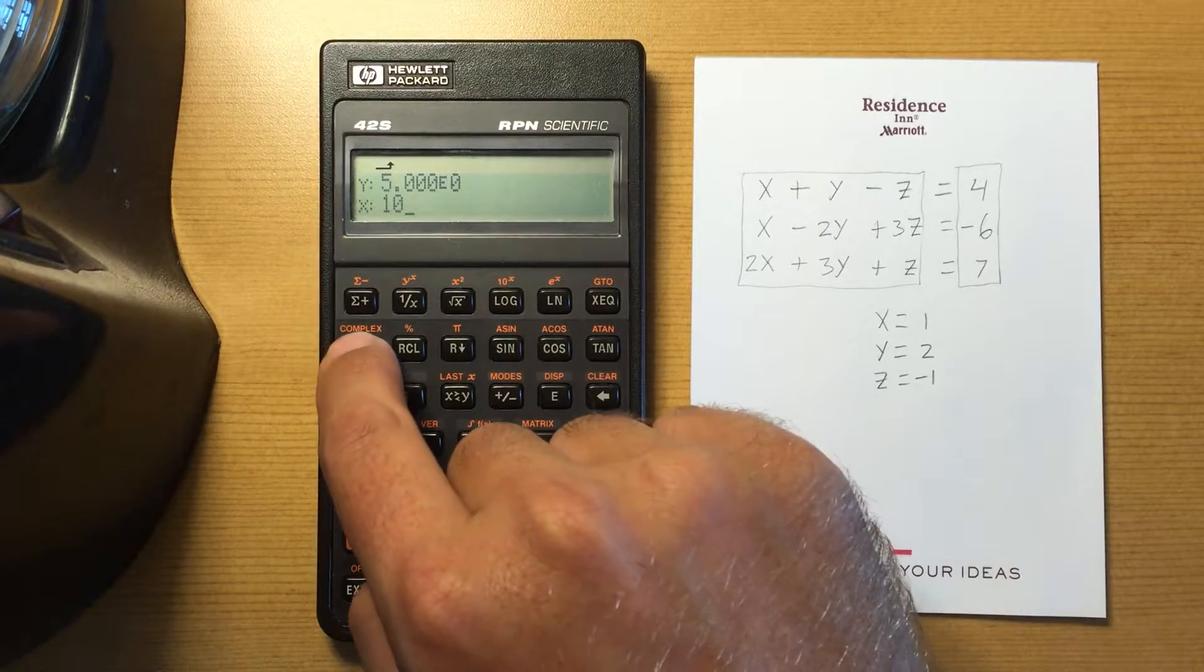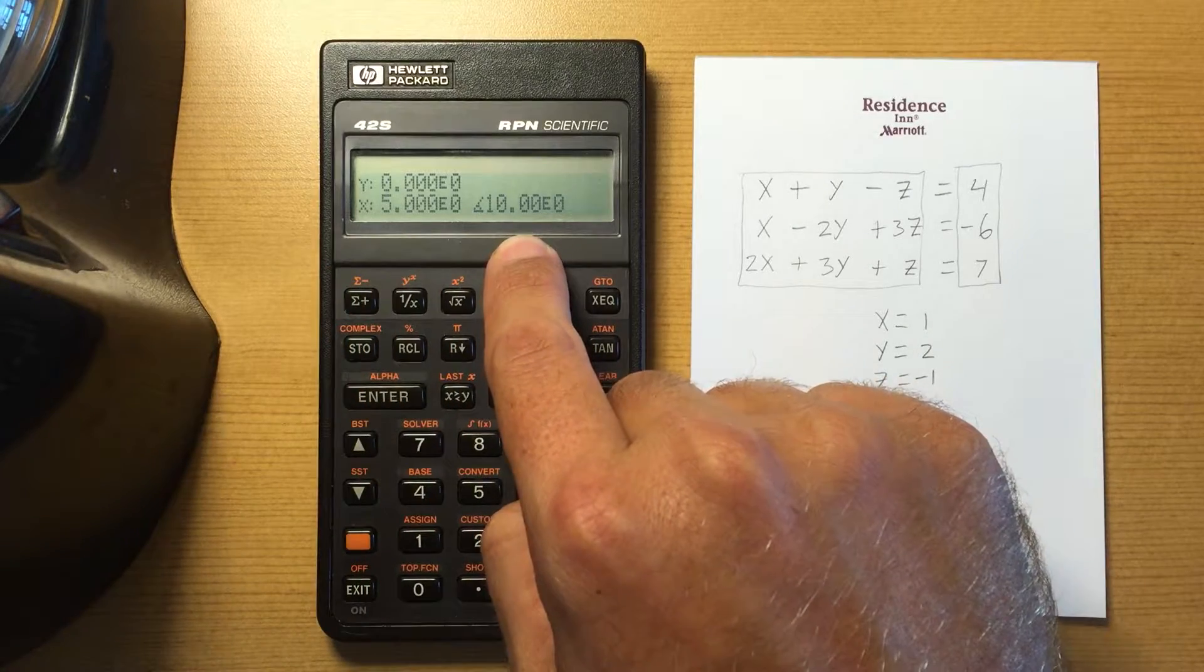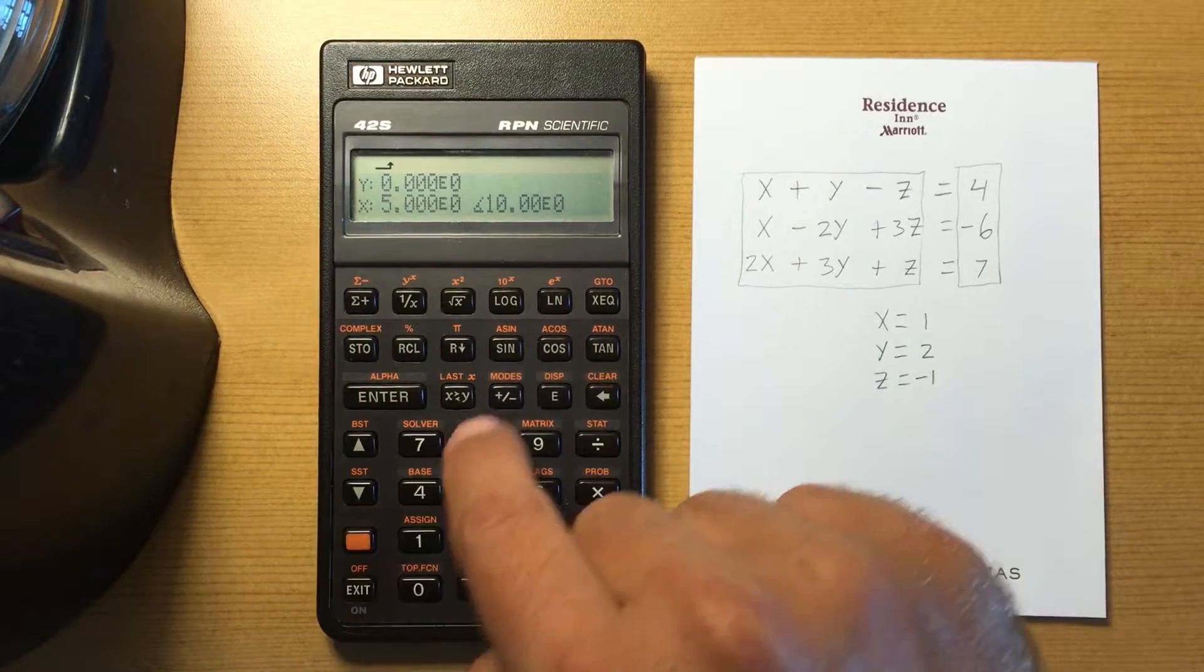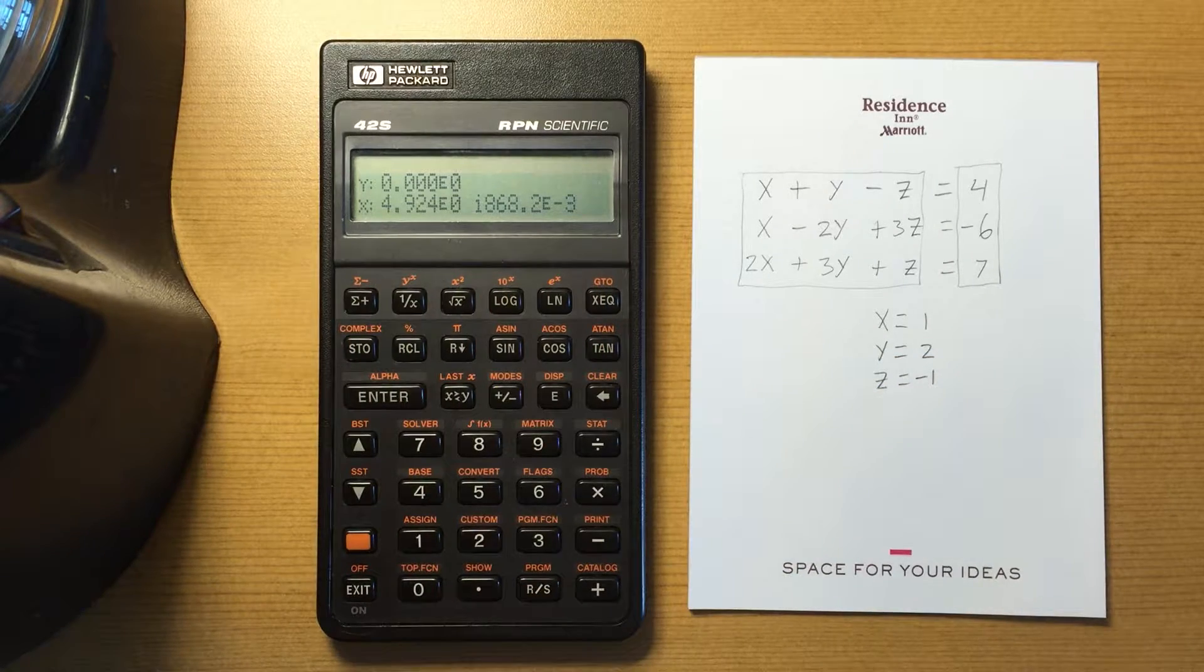If I change that mode to rectangular then I get the rectangular conversion. I could also use the convert menu to convert that to, well, still displays in rectangular form but I just converted that to polar.